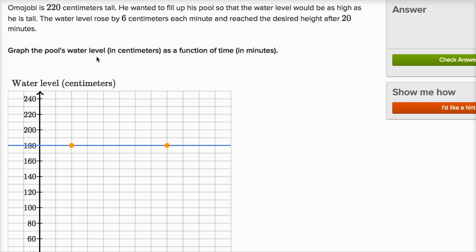Graph the pool's water level in centimeters as a function of time in minutes. Well, they tell us one interesting thing. They say that the water level reached the desired height after 20 minutes. And we know what the desired height is. The desired height is to be as deep as he is tall, and that is 220 centimeters tall.